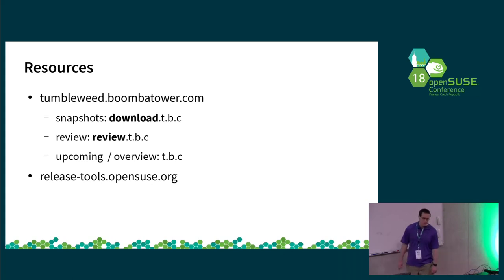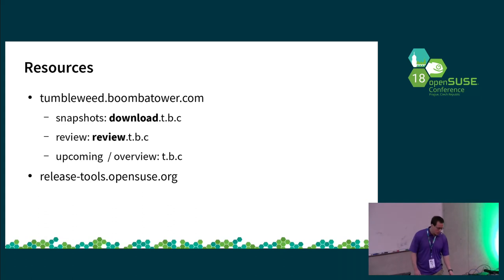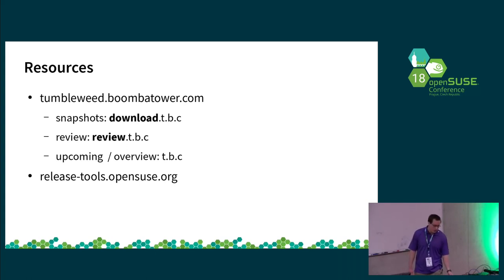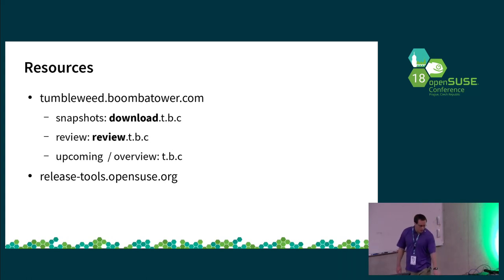The resources mentioned in the slides are all based around my hosting at tumbleweed.boomotar.com. The actual snapshots themselves mirror the download.opensuse style at download.that. The review site is right there, and the main page is a dashboard that's been around for a long time — it shows you what's upcoming, what's in the develop projects for Tumbleweed, and I write stuff at 'release tools,' which is a blog with information about a lot of these changes.